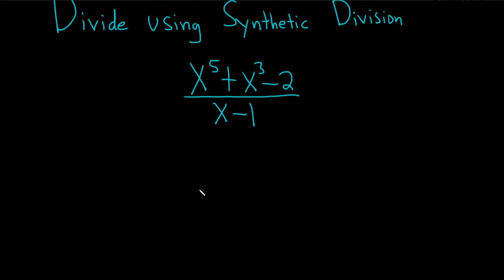So the first step when you're using synthetic division is to take this number here and change the sign. You can put a little bracket here like this. The next step is to write down the coefficients of the top part here. Now you'll notice that there's some pieces missing.